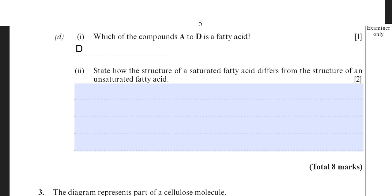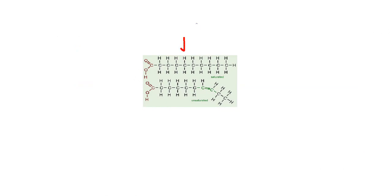Part D(ii) asks how the structure of a saturated fatty acid differs from an unsaturated fatty acid. A saturated fatty acid, like the one shown, has single bonds between the carbon atoms, and each carbon has two hydrogens attached to it, with the exception of the terminal carbon which has three hydrogens. The top structure shown is a saturated fatty acid.